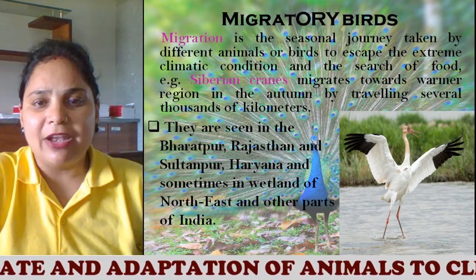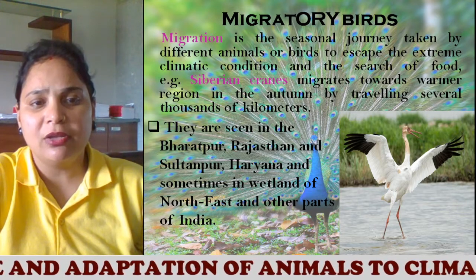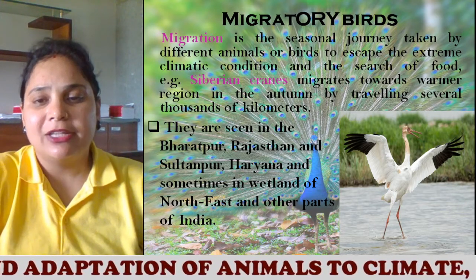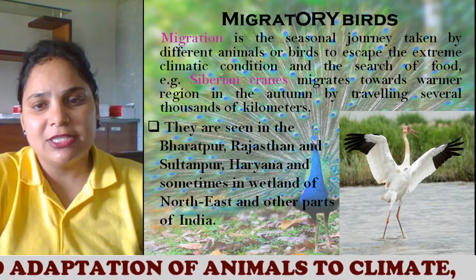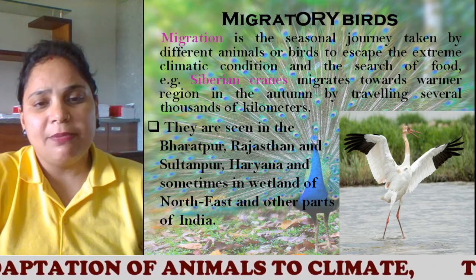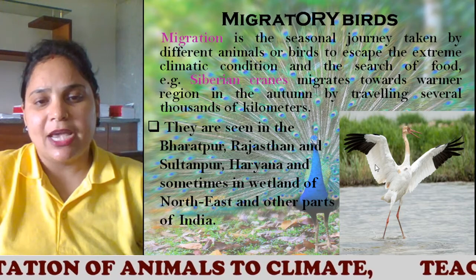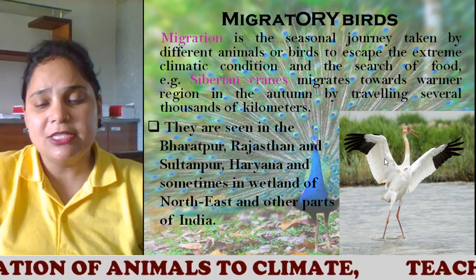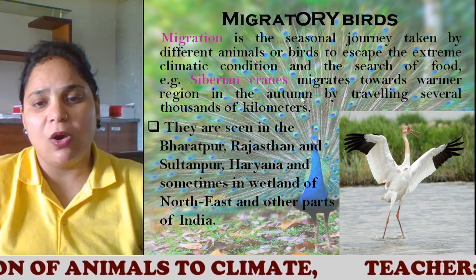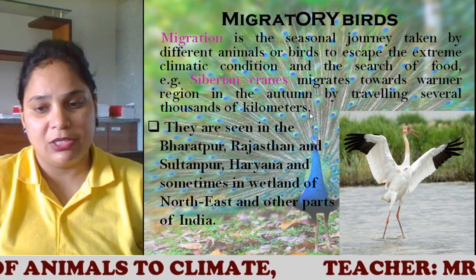These animals or birds travel from one place to another because of extreme climatic conditions and in search of food. For example, Siberian cranes — as you can see in the diagram — migrate towards warmer regions in autumn by traveling several thousands of kilometers.